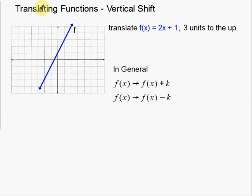Now let's go to the vertical shifts. This is a new one — translating functions with a vertical shift. This is actually a little bit easier to understand than the horizontal shift, so we did the harder one first. Just like last time, here's my function — same one, 2x plus 1 — and I want to move this three units up. I'm going to take the same three points: (−1, −1), (0, 1), and (1, 3), and simply move them three units up.